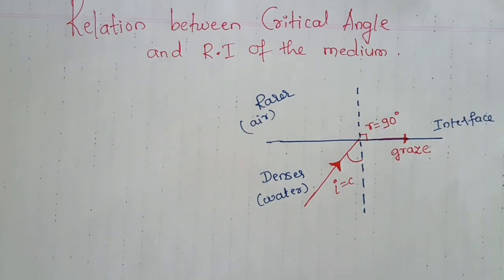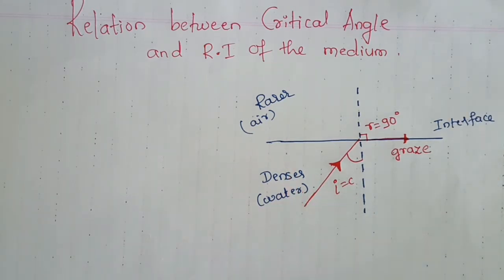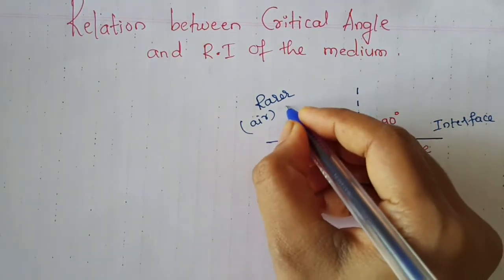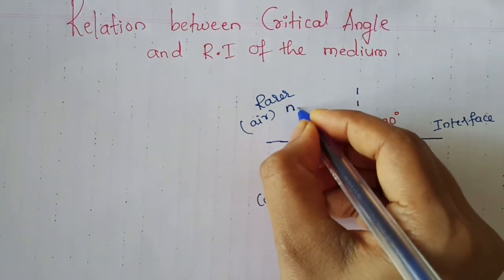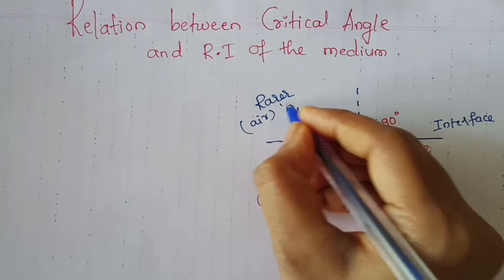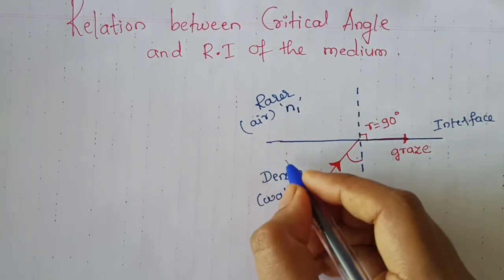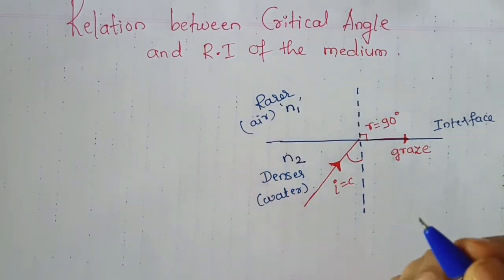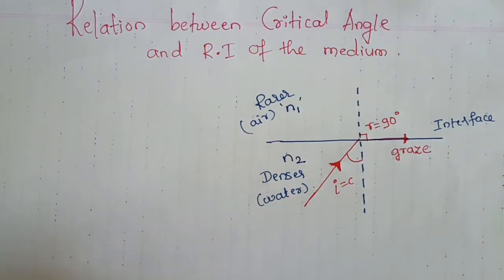Now, this is the denser medium and this is the rarer medium. Assume the rarer medium has a refractive index N1 and the denser medium has a refractive index N2.